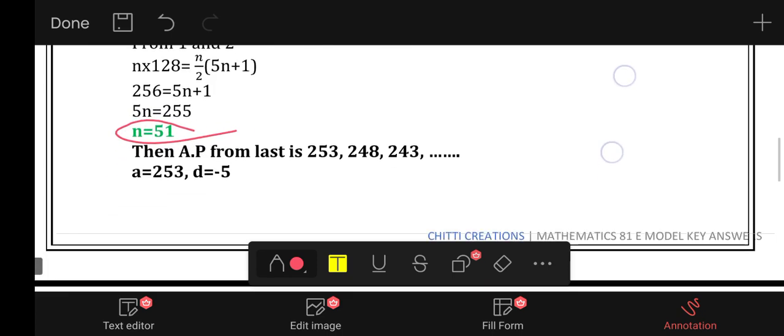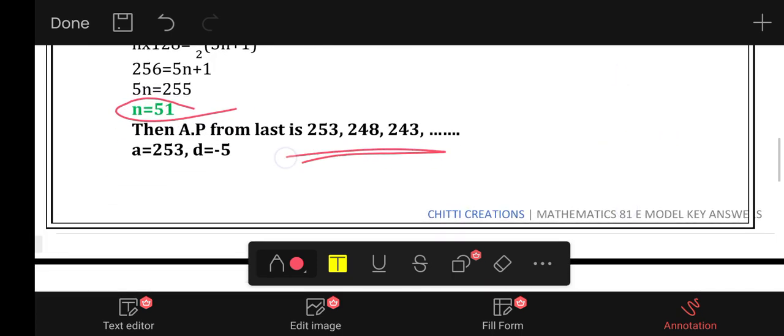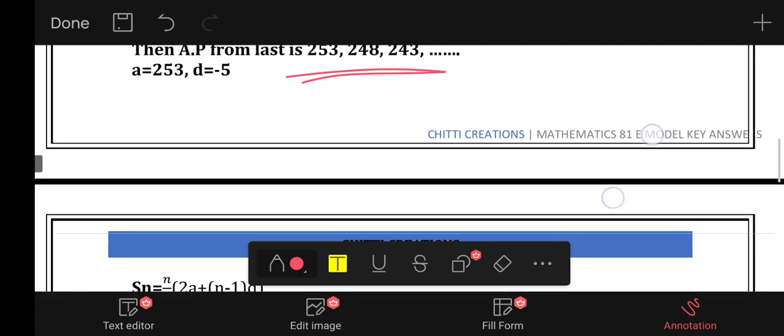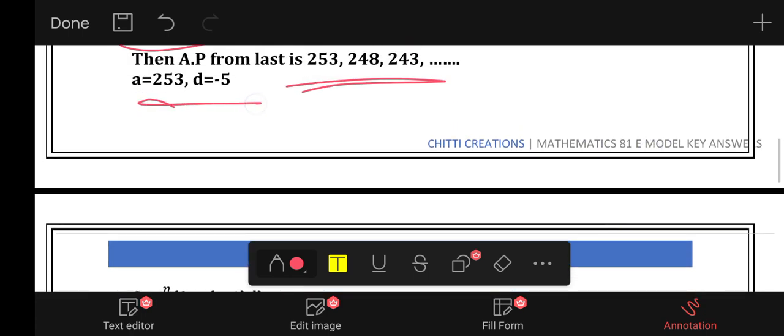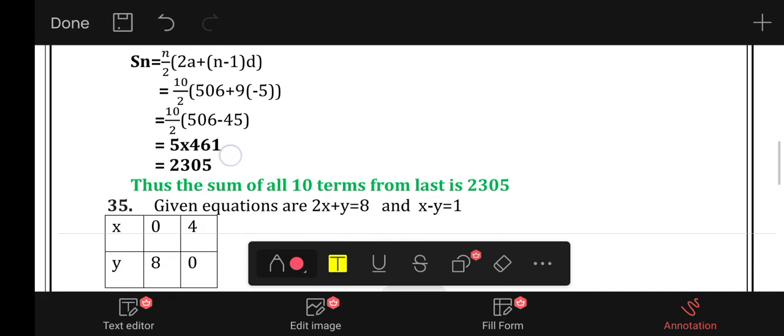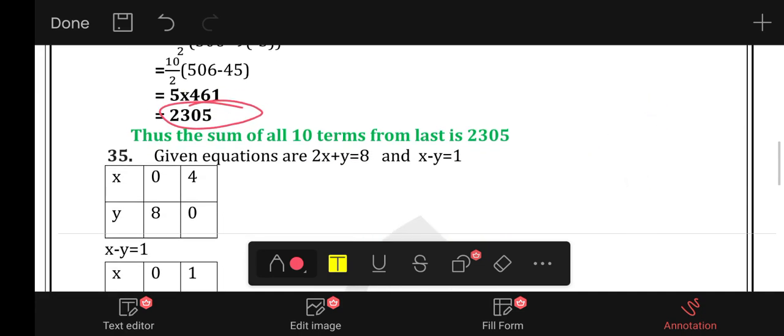n is equal to 55, AP where a is equal to 253, d is equal to minus 5. Sn is equal to 2305, so that's the answer.